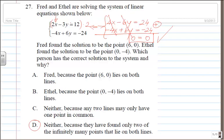Because, as you remember from the previous video, the point (6, 0) will verify both equations. The point (0, -4) will verify both equations. But neither Fred nor Ethel is right because we have an infinity of points that will verify those two equations. And those points all together would be nothing else but the line.